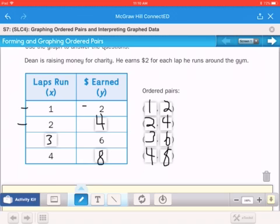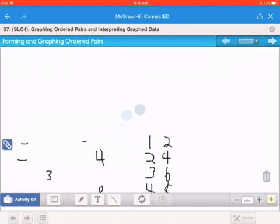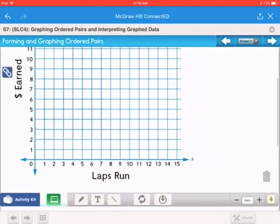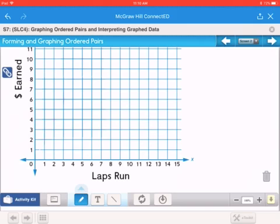Then the next thing we're going to do is graph these. We'll graph these on the next screen. So we'll move that over, pan it up a little bit. The first one was one lap, so we go one over and $2 earned. So one, two is right about there.